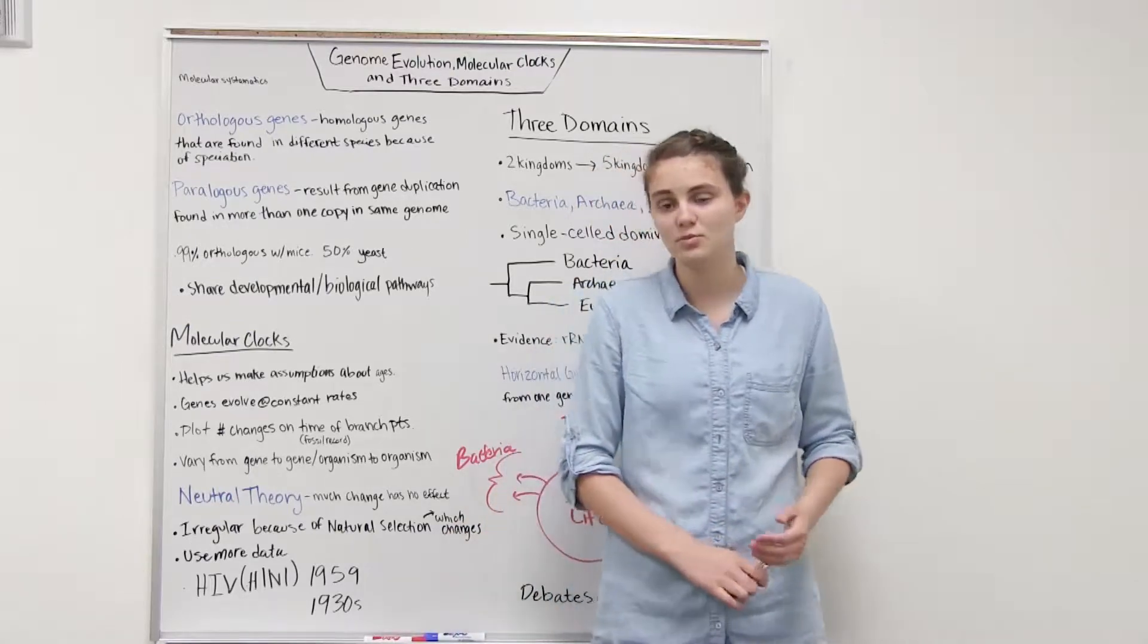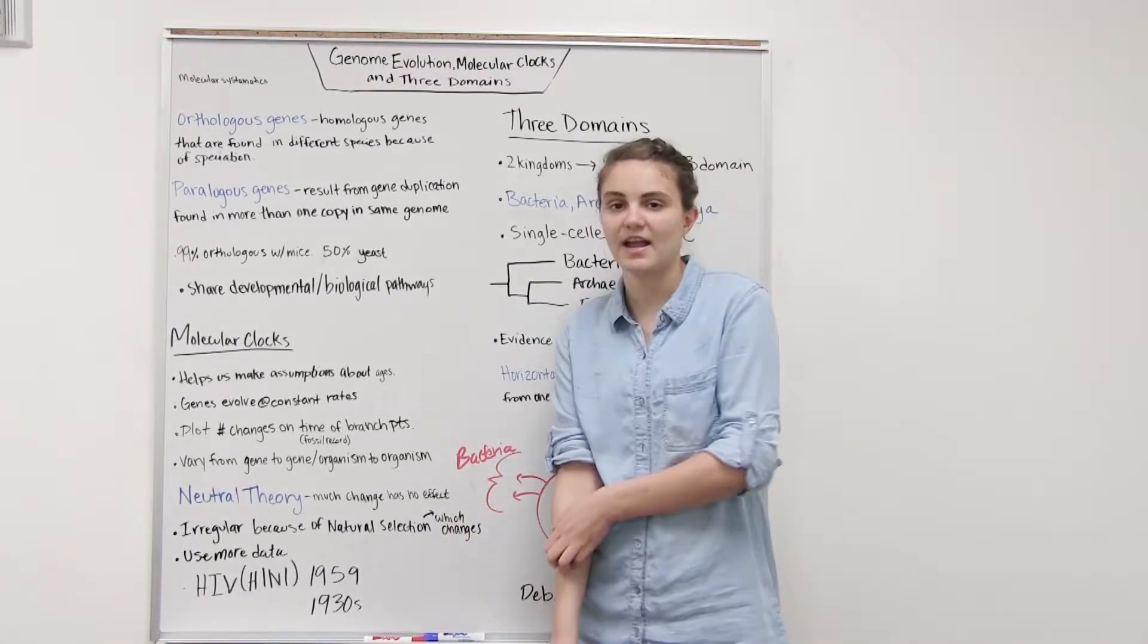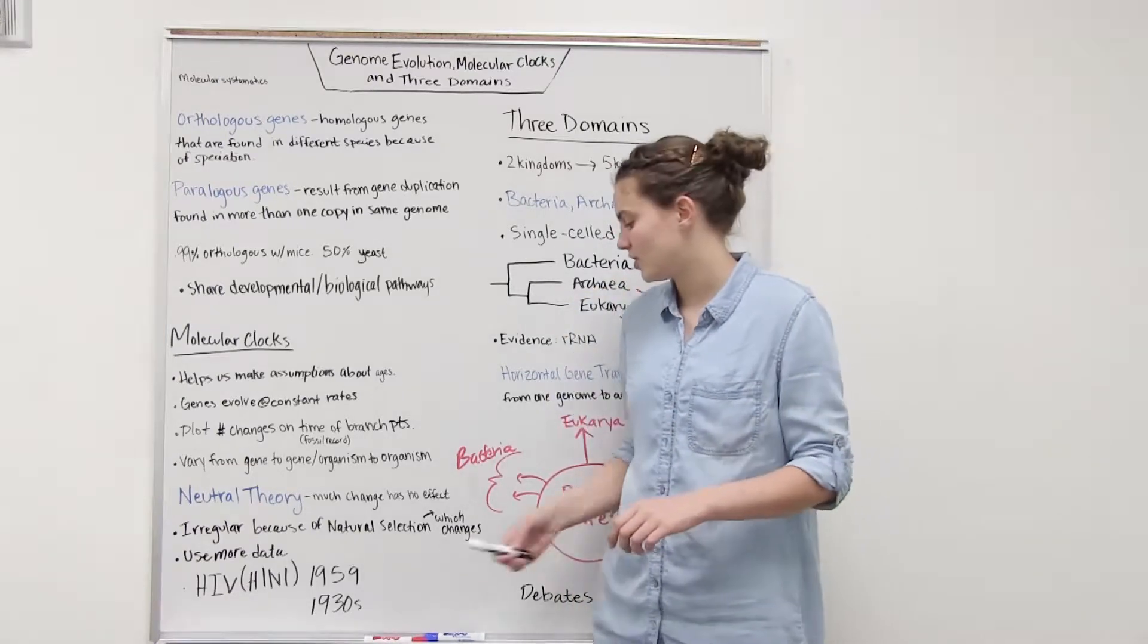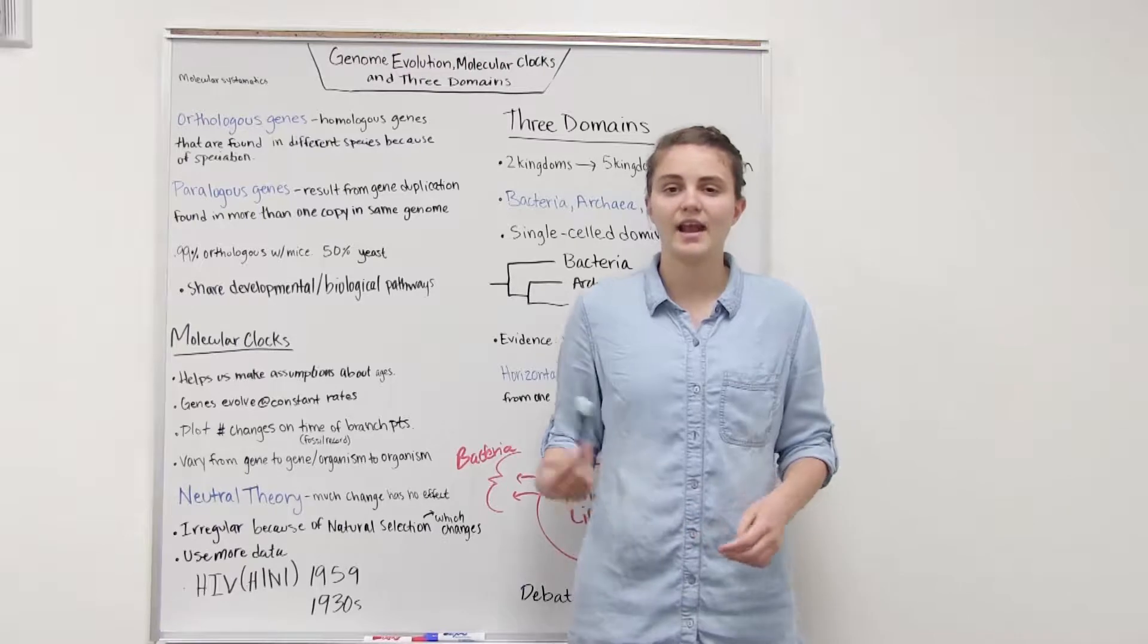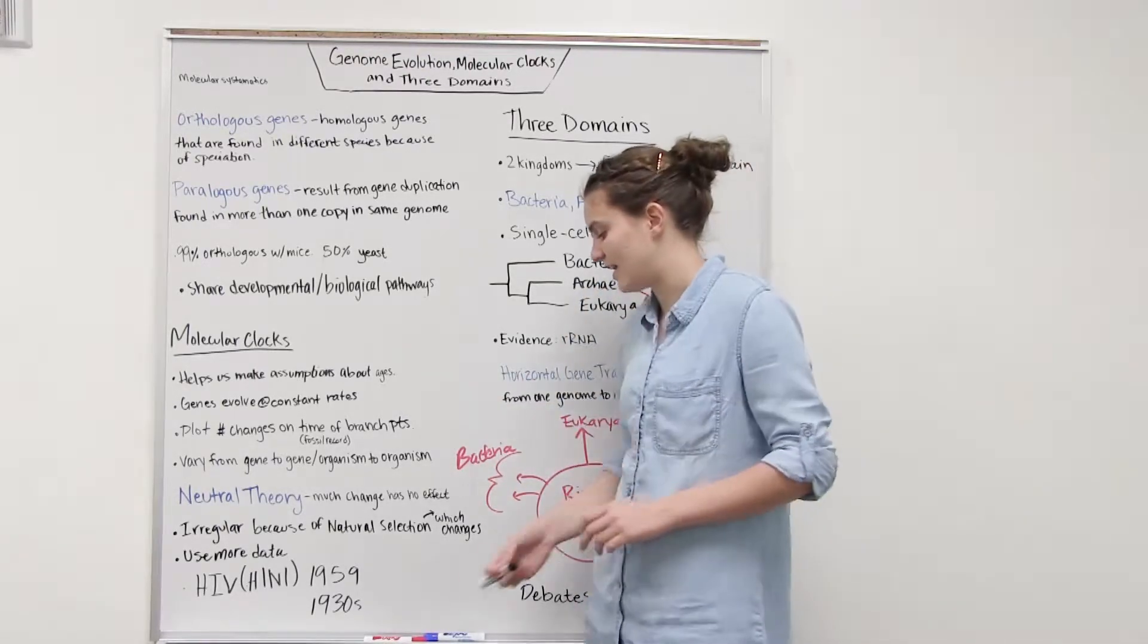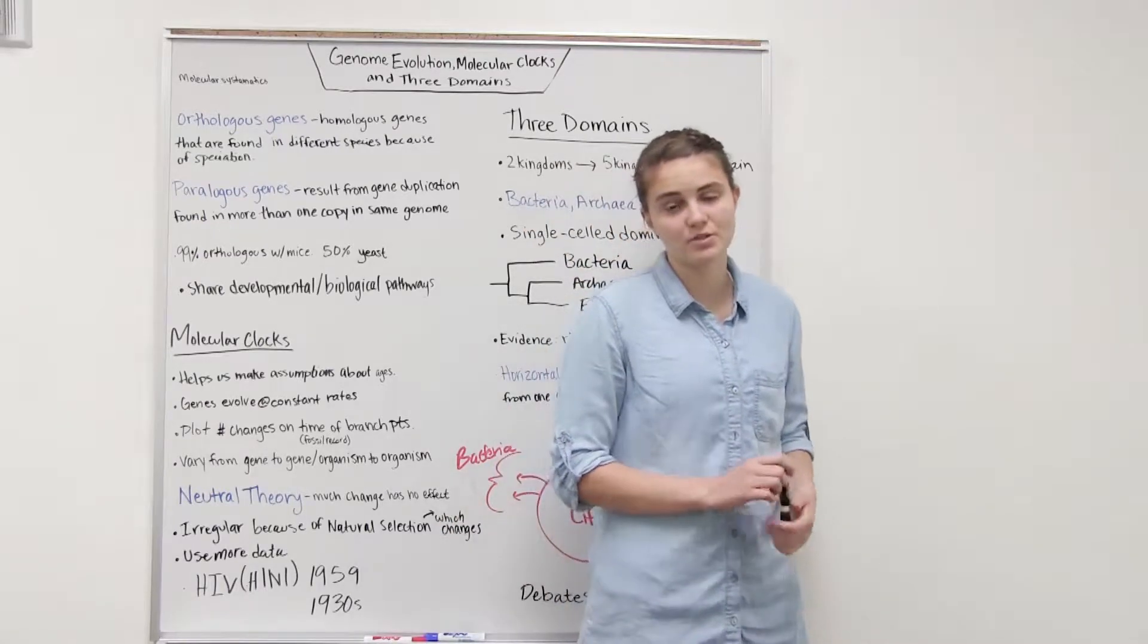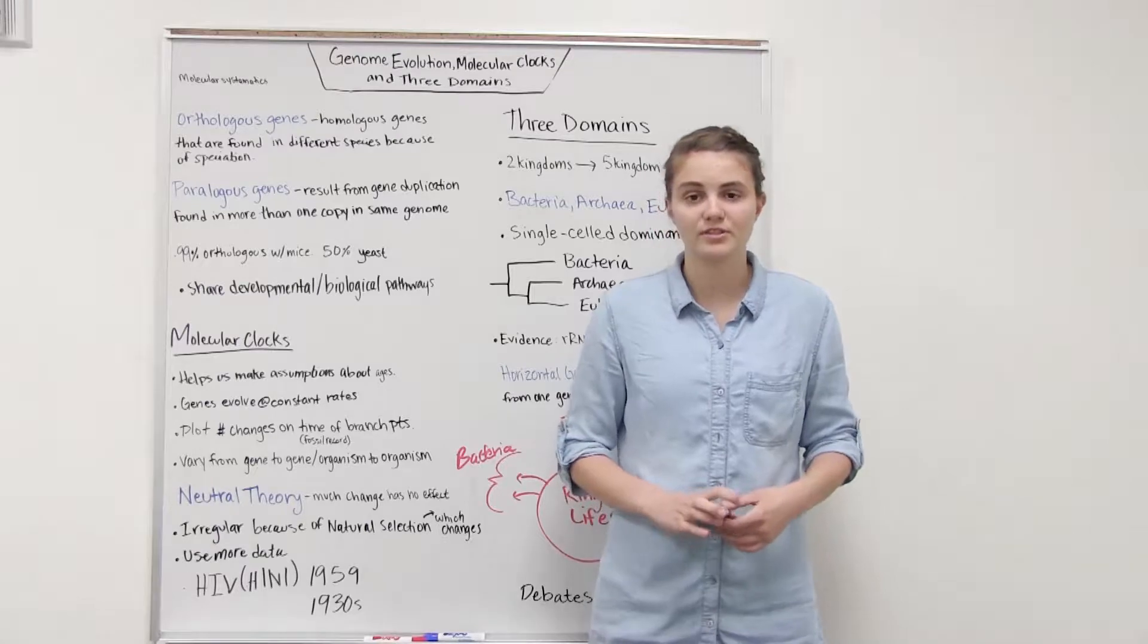An example in which they did this was with HIV. They're trying to figure out when the H1N1 virus first came into humans, and so they were able to use some data of gene changes in 1959 and compare them and make a molecular clock on it. They figured that in about the 1930s is when this H1N1 virus was first introduced.